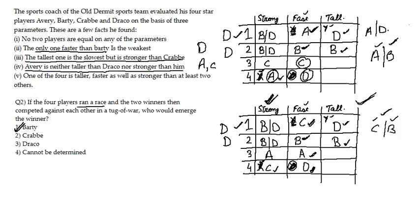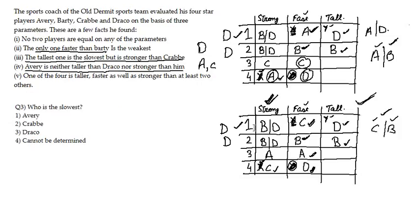The third question: who is the slowest? D is the slowest in the first table and D is the slowest in the second table as well. So our answer is Draco — the third option.